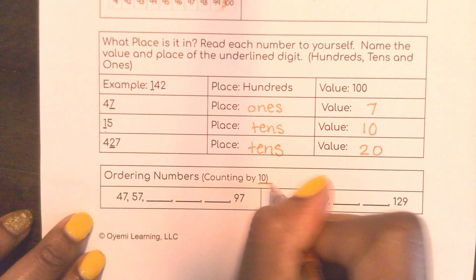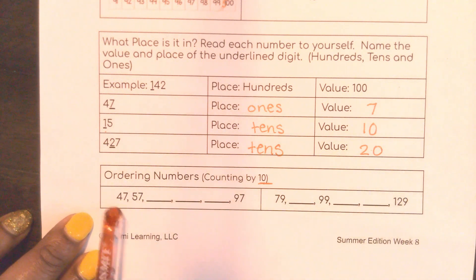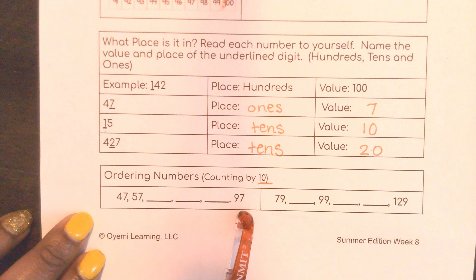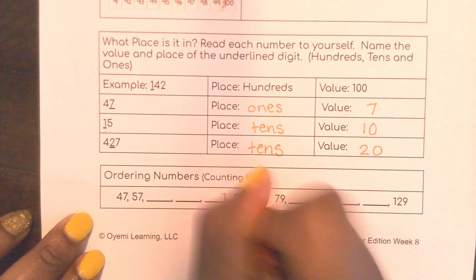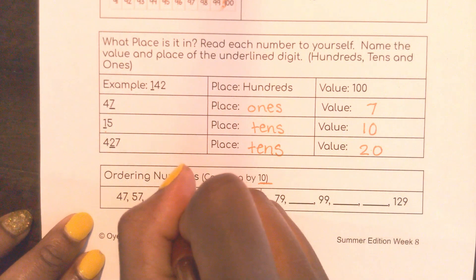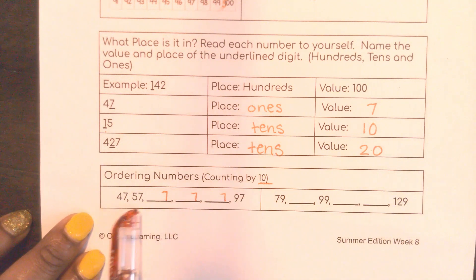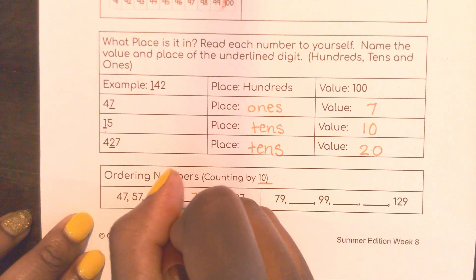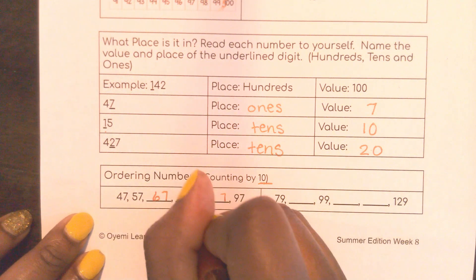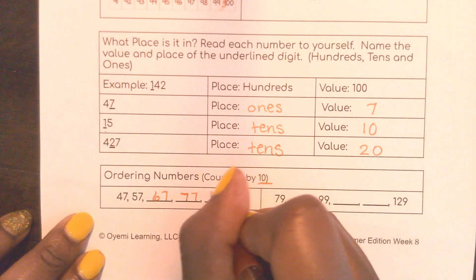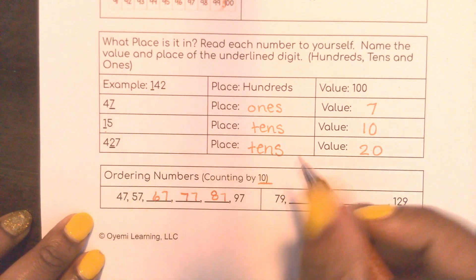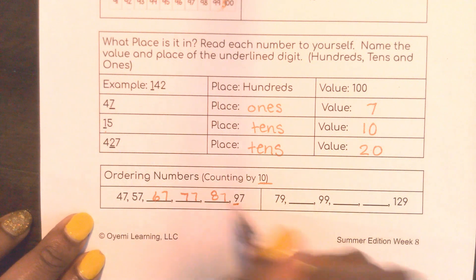Now here, my directions say I'm counting by 10. And I have to look at all of the numbers in my pattern. So this 1s place stays the same. So I'm pretty sure the 1s place will stay the same. And my 10s place is what's changing. So I have 47, 57, 67, 77, 87. And look, here's my 97. That lets me know that I followed the pattern.